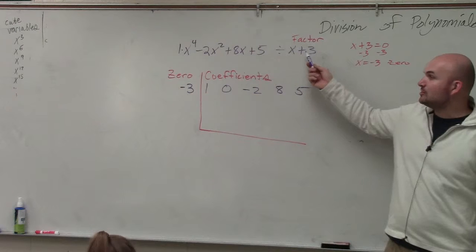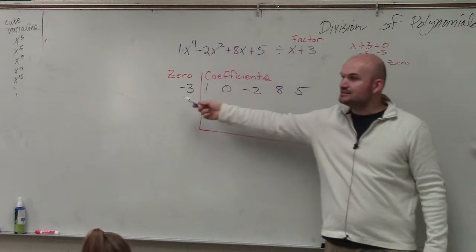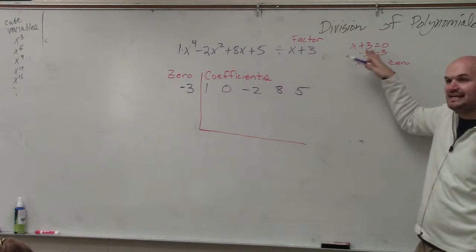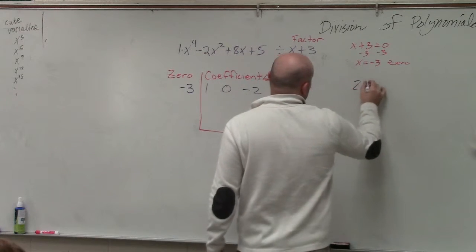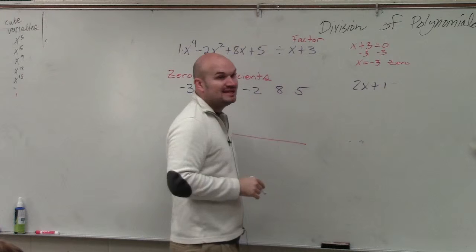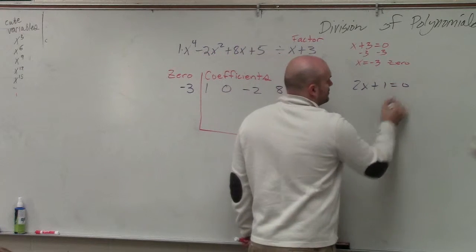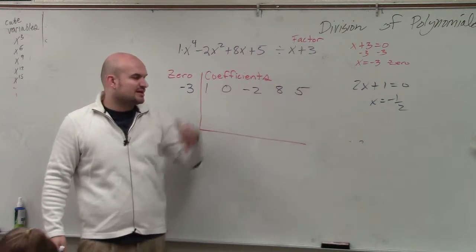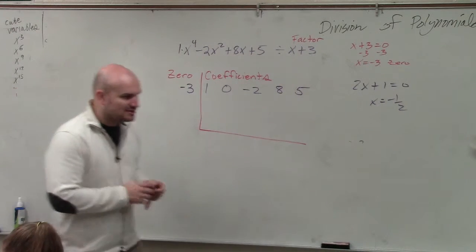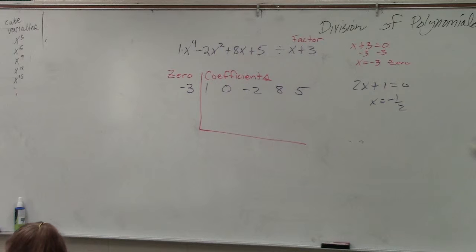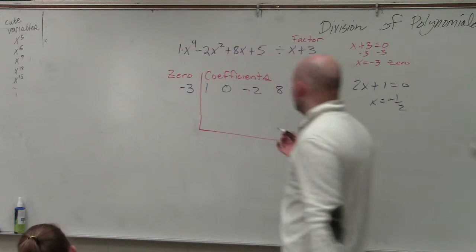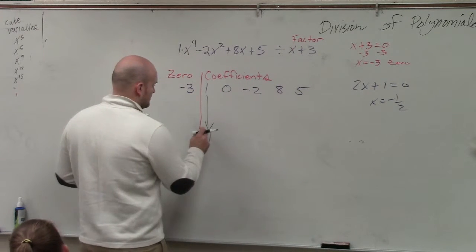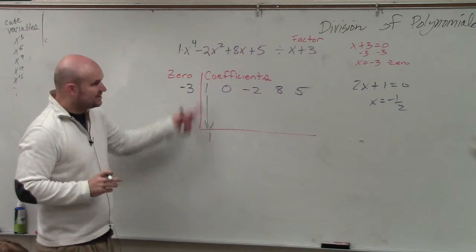The most common mistake is everybody just takes 3 and puts a 3 there — no. Whatever your factor is, set it equal to 0, because my divisor could look different and that would give a different zero. So make sure whatever your factor is, you set it equal to 0. Now the process: the first term, you bring down — it's called a freebie, the easiest one. So bring down the 1.